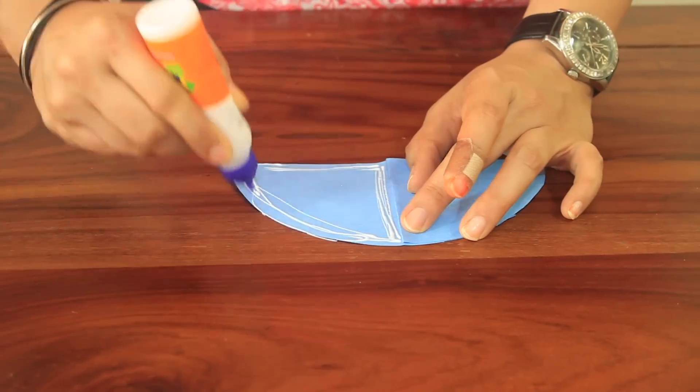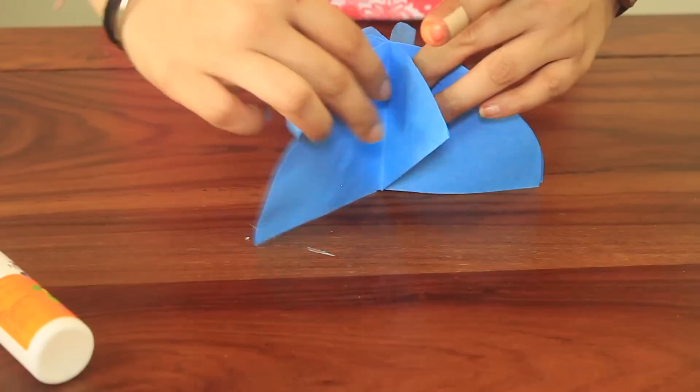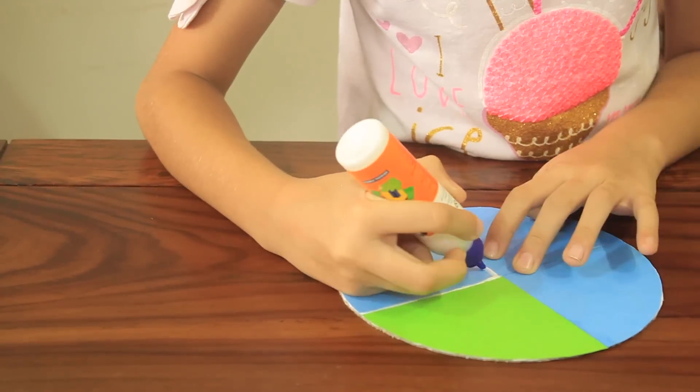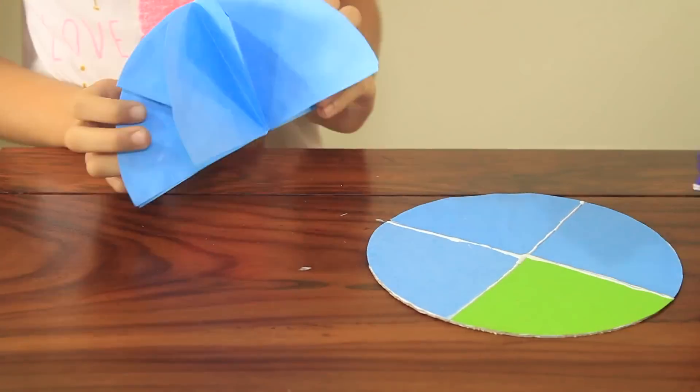Join the circles together and you will have an umbrella kind of structure. Glue the structure to the base. You will get 4 equal parts to show 4 stages of the water cycle.